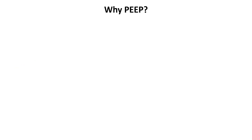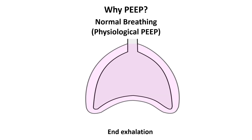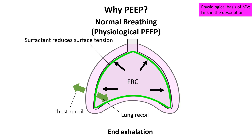When we breathe normally, our lungs stay partially inflated at the end of exhalation because of functional residual capacity and the balance between lung elastic recoil and chest wall forces. The surfactant in the alveoli also reduces the surface tension that tends to collapse them. However, during mechanical ventilation, this natural mechanism is lost, making PEEP essential.